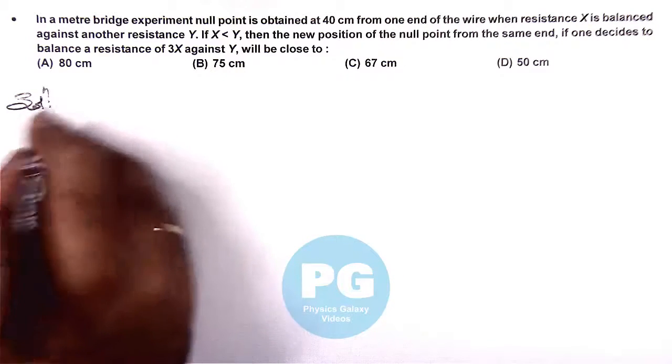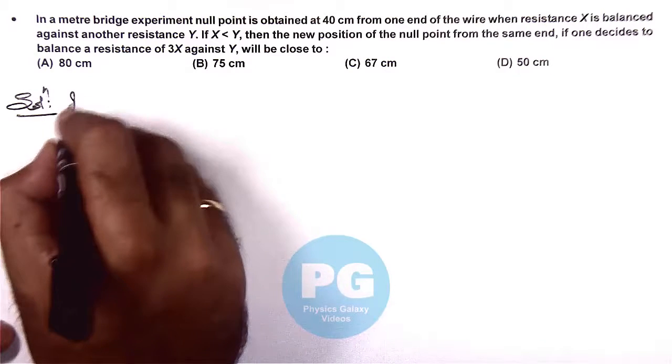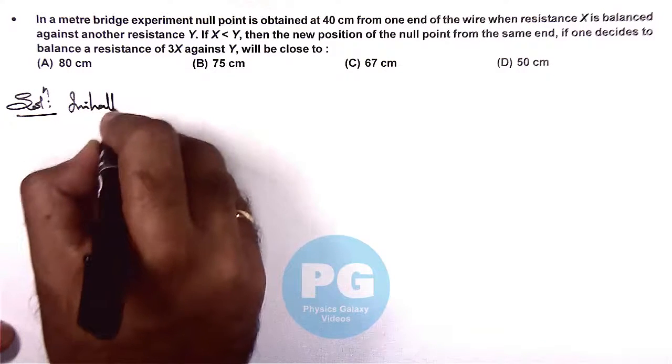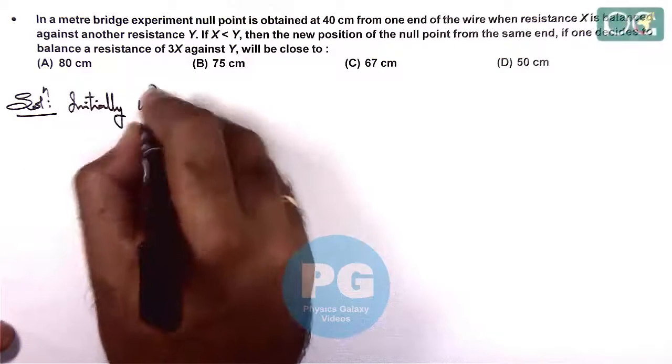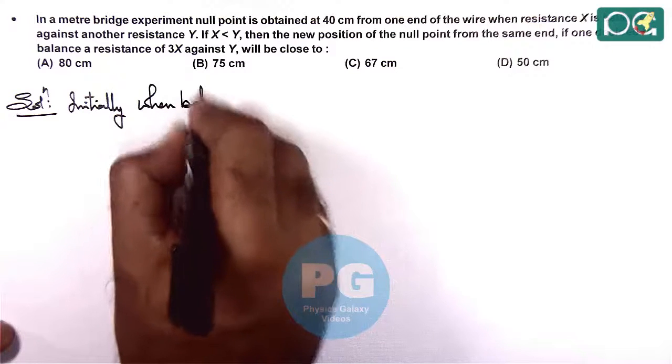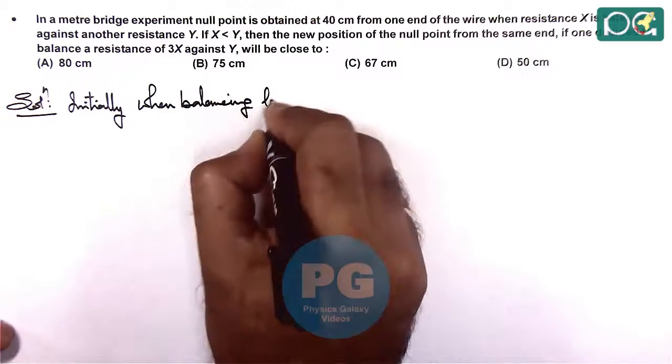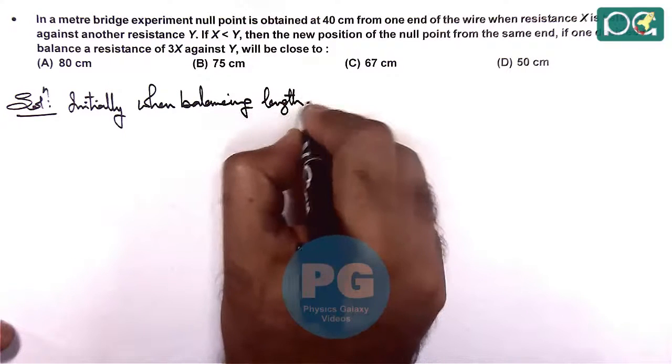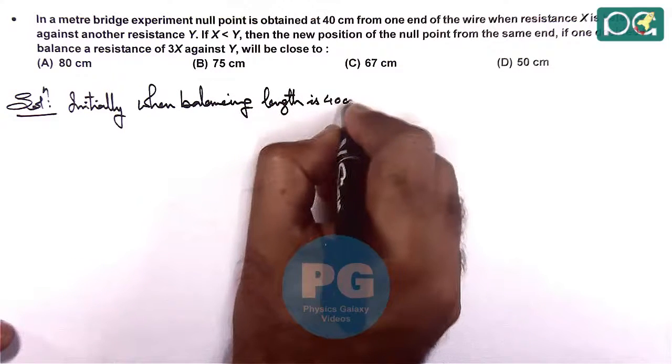Here we can directly write, initially, the balancing length is 40 centimeters.